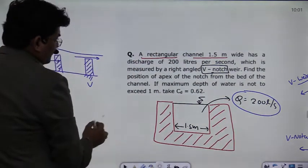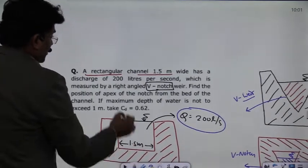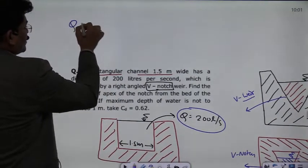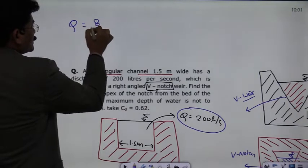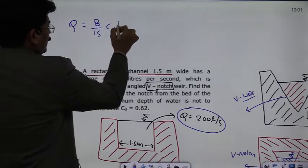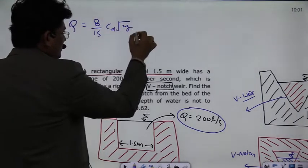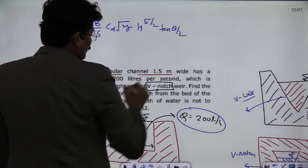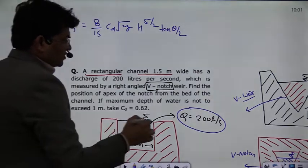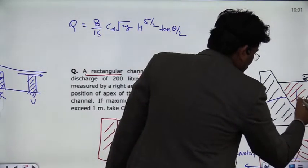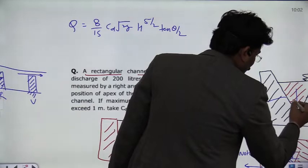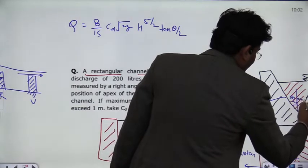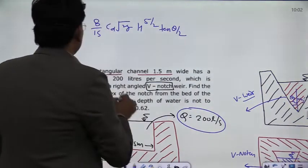So v-notch formula here. Formula for v-notch was derived in class: this is 8 by 15, C_d multiplied by root 2g, multiplied by h raised to the power 5 by 2, multiplied by tan theta by 2. In the question, we know that the total angle is the right angle, right angle v-notch, so theta by 2 is 45 degree.